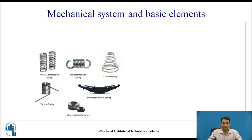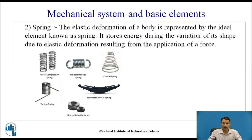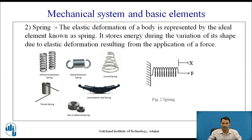The second element is spring. Springs may have different types like helical compression spring, helical extension spring, conical spring, and torsion spring. The elastic deformation of a body is represented by the ideal element known as spring. It stores energy during the variation of its shape due to elastic deformation resulting from the application of a force. The spring is represented by its symbol, applied by force F and having displacement X.